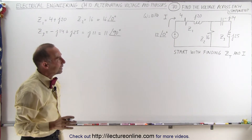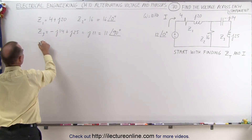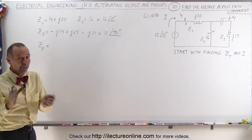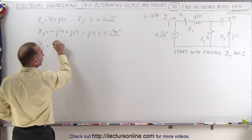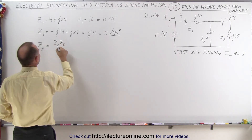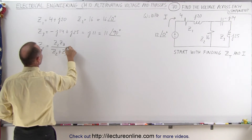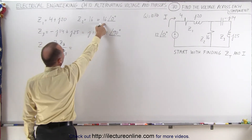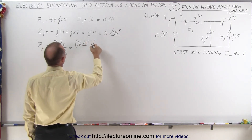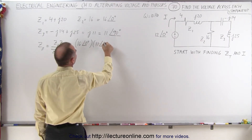Now we need to find the impedance of the parallel branches. The impedance of the two parallel branches equals the product over the sum: Z2 times Z3 divided by Z2 plus Z3. The product is 16 at 0 degrees multiplied by 11 at 90 degrees, divided by the sum of the two.